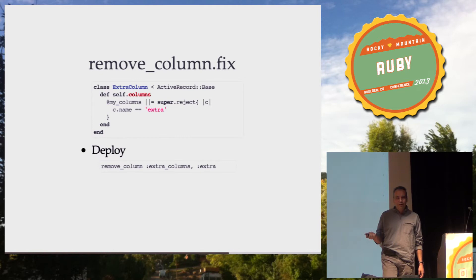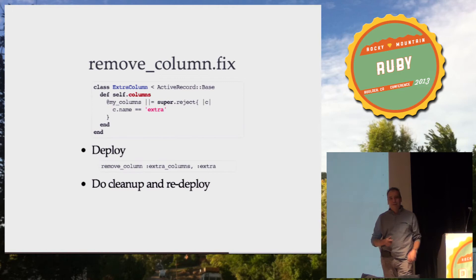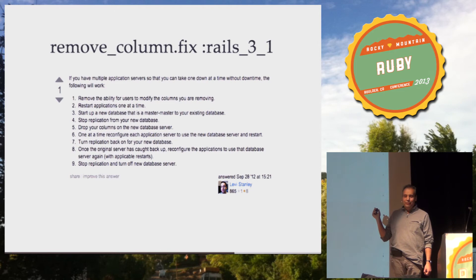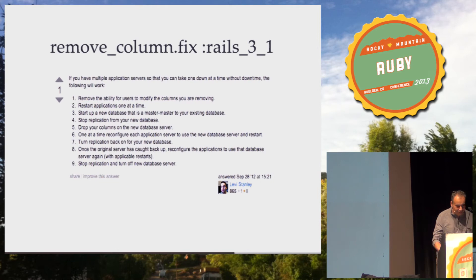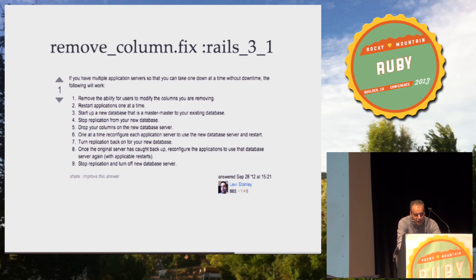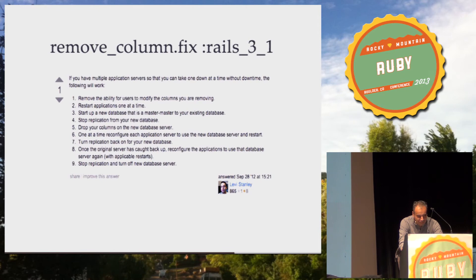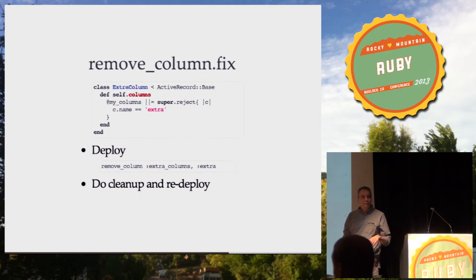After we deploy our application, ActiveRecord has no clue that this column exists. After that, we can easily remove the column without any crashes, and do the cleanup any time later. For Rails 3.1, here is the procedure from StackOverflow: start a new database master-mastered to your existing database; stop replication from the new database; drop your columns on the new database server; one at a time, reconfigure each application server to use the new database server and restart; turn replication back on; once the original server has caught up, reconfigure to use it again with applicable restarts; stop replication and turn off the new database server. Can you recite the steps by memory?